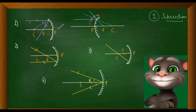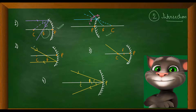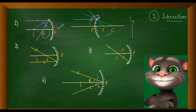For a concave mirror, when a ray parallel to the principal axis is incident on the reflecting surface of the mirror, after reflection this ray will pass through the principal focus — this applies to both concave and convex mirrors. These are the rules which govern image formation by spherical mirrors.